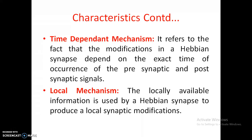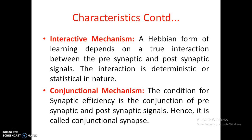Coming to the local mechanism: the locally available information is used by the Hebbian synapse to produce local synaptic modifications. The information must be locally available to the synapse — it cannot be taken from a far distance. Coming to interactive mechanism: a Hebbian form of learning depends on a true interaction between the presynaptic and postsynaptic signals. The interaction is deterministic or statistical in nature, depending on some statistical equations.